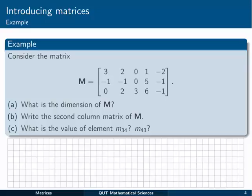Let's have a look at an example. Here we have a matrix M. We're asked to see what the dimension of M is, then to write down the second column matrix of M, and then write what is the value of element M34 and M43. Give yourself a couple of moments now to have a go at that, and then come back to the video and see if you've got the same as I have.